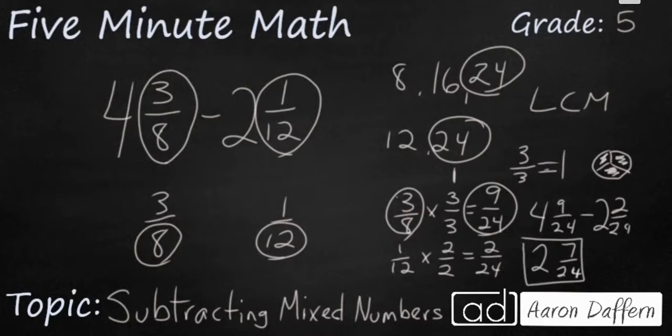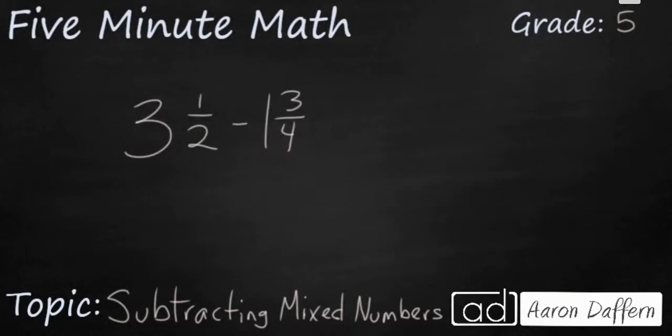Let's look at a different example. Let's say we want to subtract 3 and a half minus 1 and 3 quarters. Well, once again, let's look at our fractions. Denominators are different. Though finding the least common multiple is going to be fairly easy here because if I list out my multiples, you see 4 is the same number on both lists. That's my least common multiple.